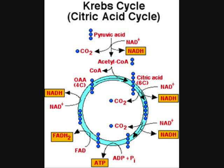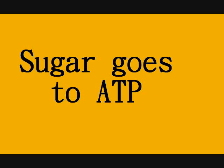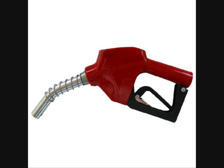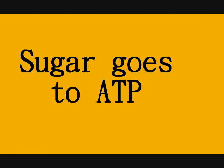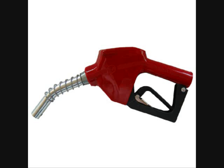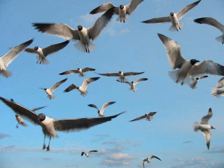Each turn in the cycle yields 1 ATP. However, since the chain is broken, it must make the cycle twice for each glucose. This will give us 2 ATP so far. Sugar goes to ATP — fuel for birds and you meet.